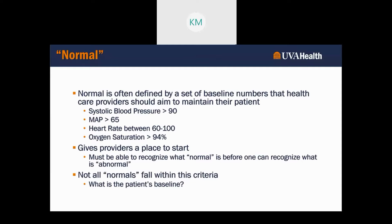A patient with a heart rate of 50 — technically that falls below normal. But that may be normal for that patient. Maybe that patient is a runner and they have a low resting heart rate at baseline. Or maybe that patient is elderly and is beta-blocked, and that's where their heart rate lives because they're beta-blocked.